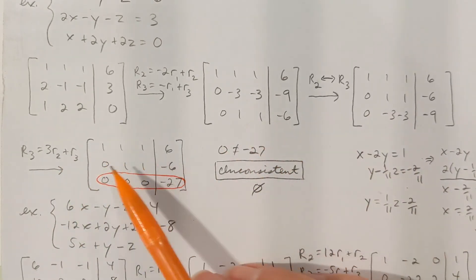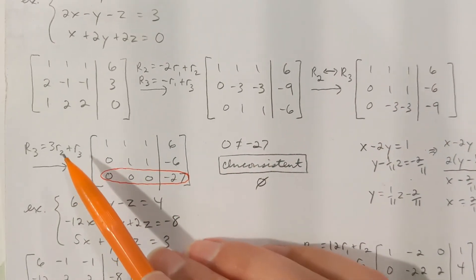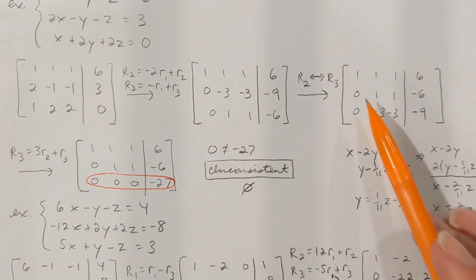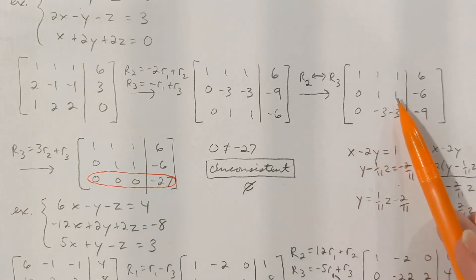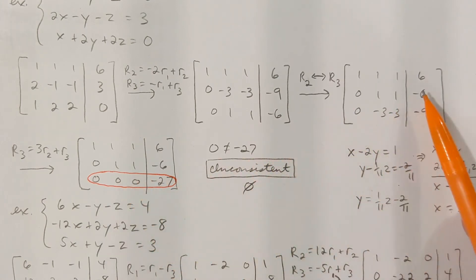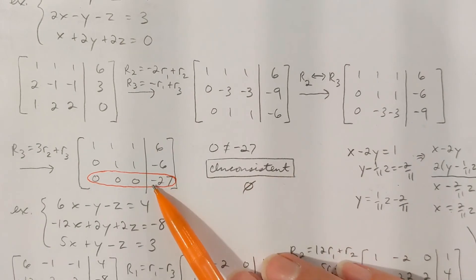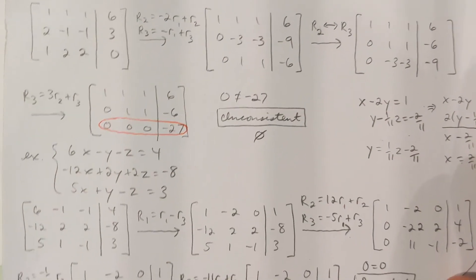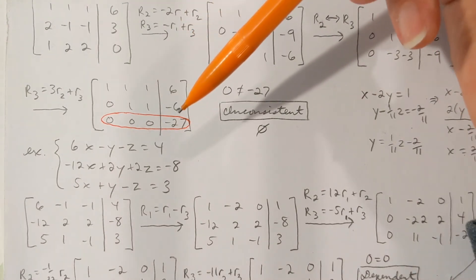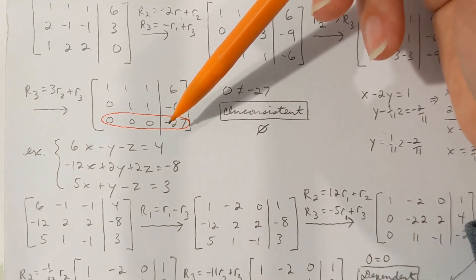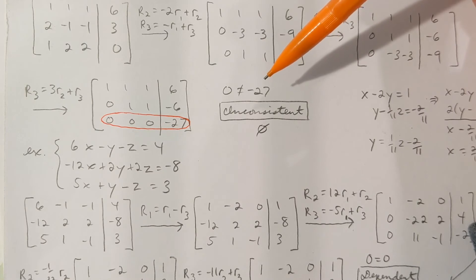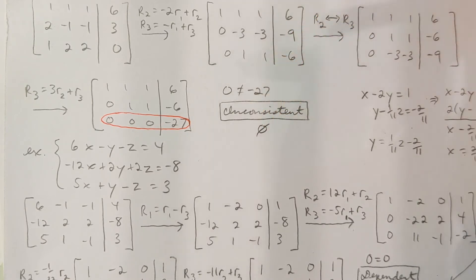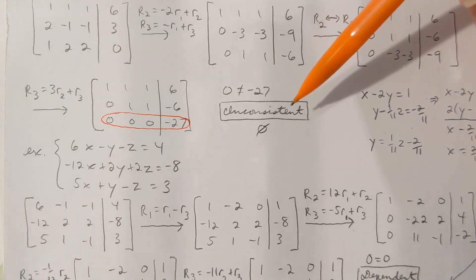Rows 1 and 2 stay as they were. Taking 3 times row 2 plus row 3: 0 plus 0 is 0, 3 times 1 minus 3 is 0, 3 times negative 6 minus 9 is negative 27. If I convert back to a system, the third equation would be 0 equals negative 27. That's not true. Any time you've eliminated a variable and you're getting a false statement, you're going to have an inconsistent system. There are no solutions to this system.